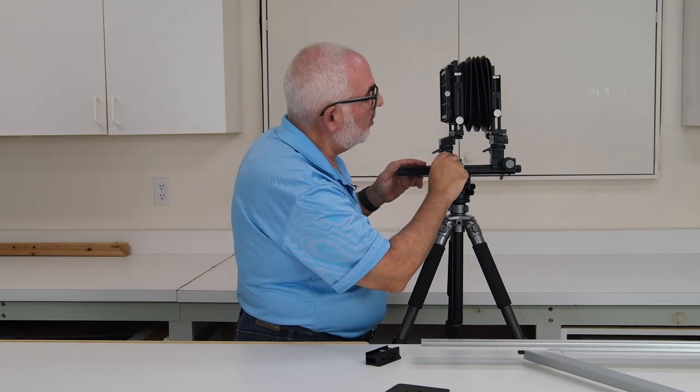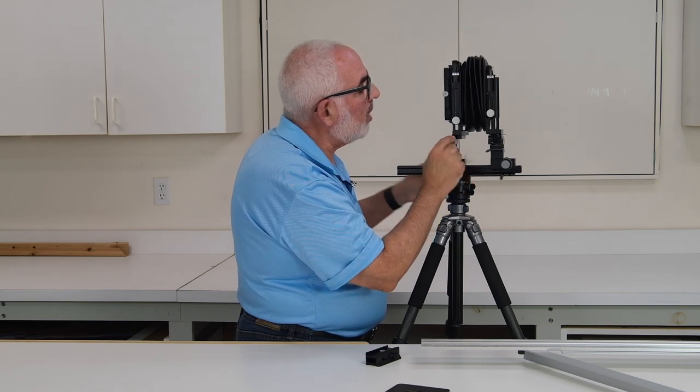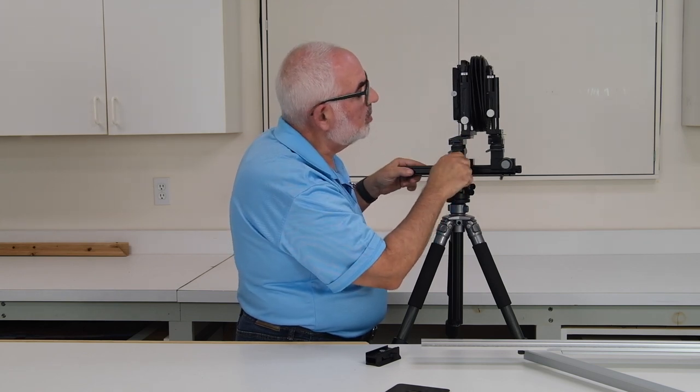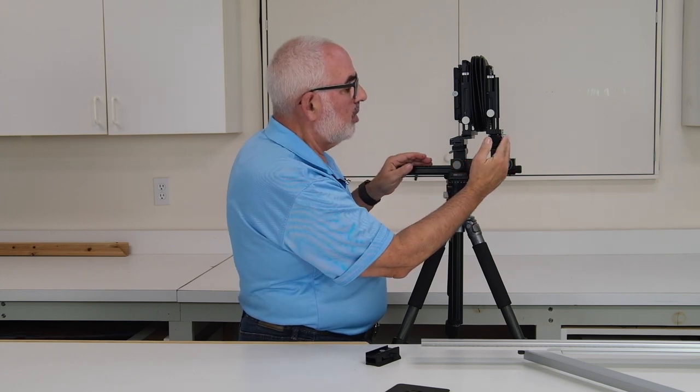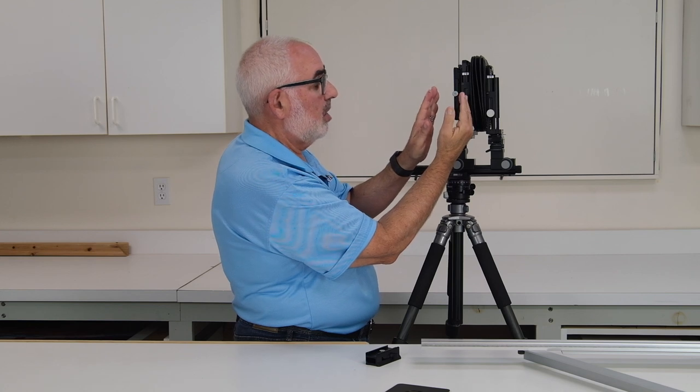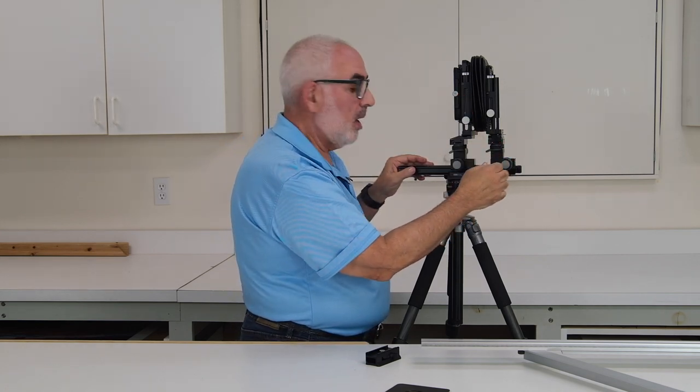And before I forget, one thing you can see here, one of the advantages of a camera like this is the back rail moves towards the front, which is very convenient for wide-angle lenses. I like that design better than the one where the front stand goes back and the rear stand goes back and they meet in the middle. This way you don't have to worry about a rail sticking into your wide-angle lens.